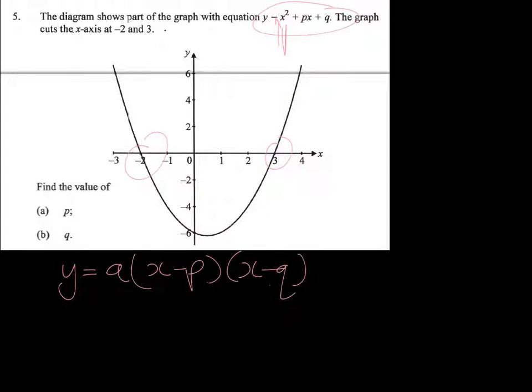because we're told in the question that it's just x squared, i.e. the coefficient is 1, we know that the value of a is 1, so we can essentially dismiss that in this instance.